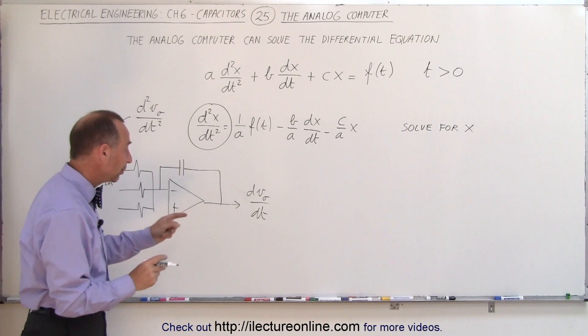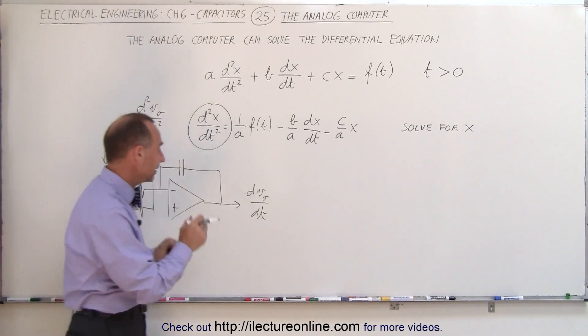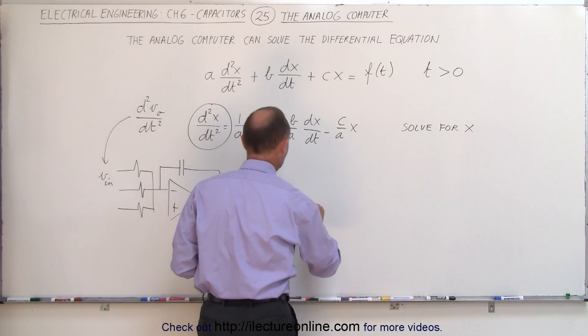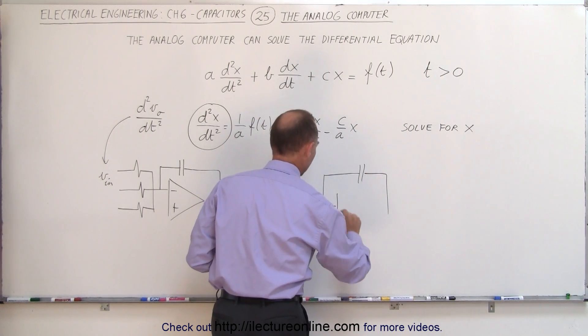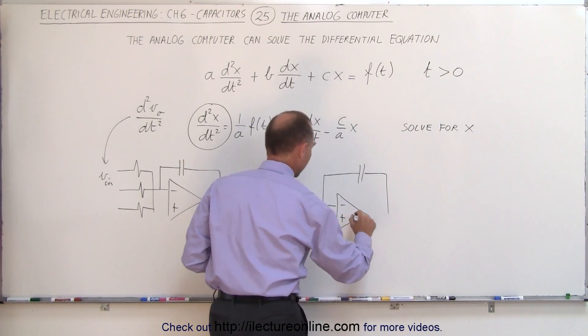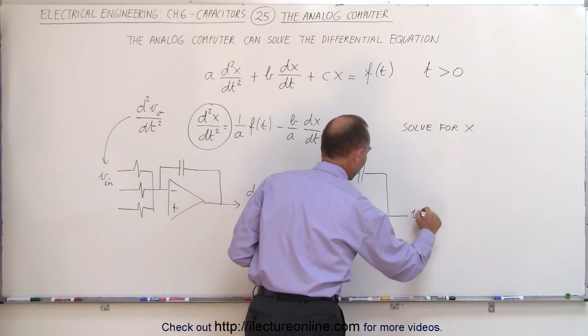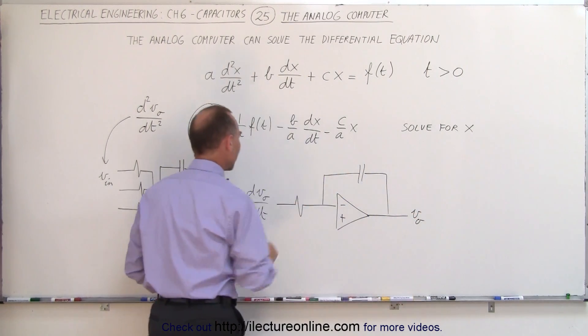And then we're going to take that output and feed it into a second integrator. So this is then going to feed into a second integrator. We're going to have a capacitor here and another integrator circuit right here. And that will eventually give us an output voltage.